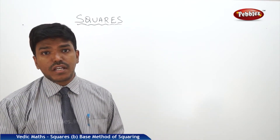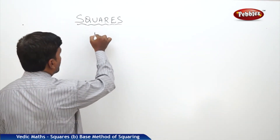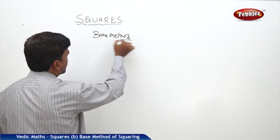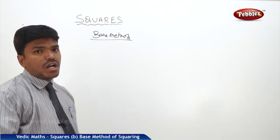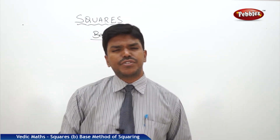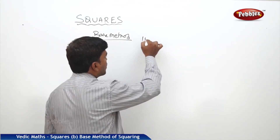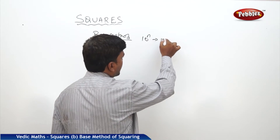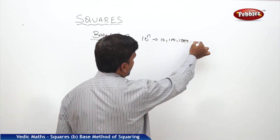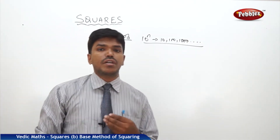Now, squares using the base method. How to find out the squares which are nearer to the base? In general, the numbers we take as base are in the format 10 power n — that is 10, 100, 1000 and so on. So how to find out the squares of numbers which are nearer to the base?